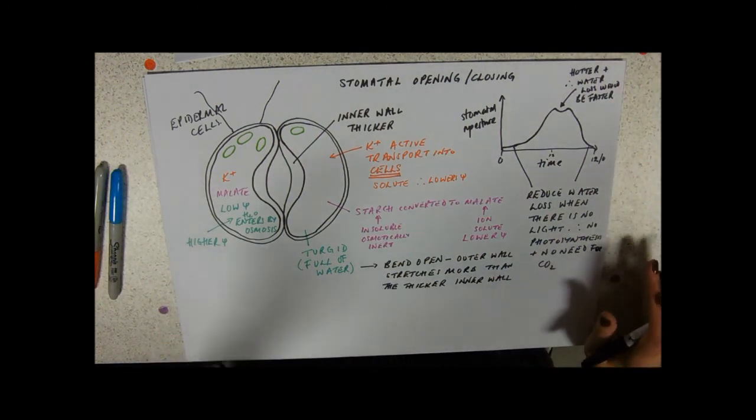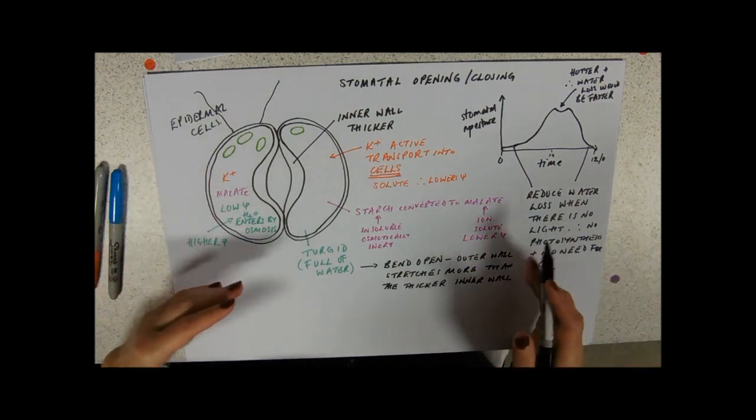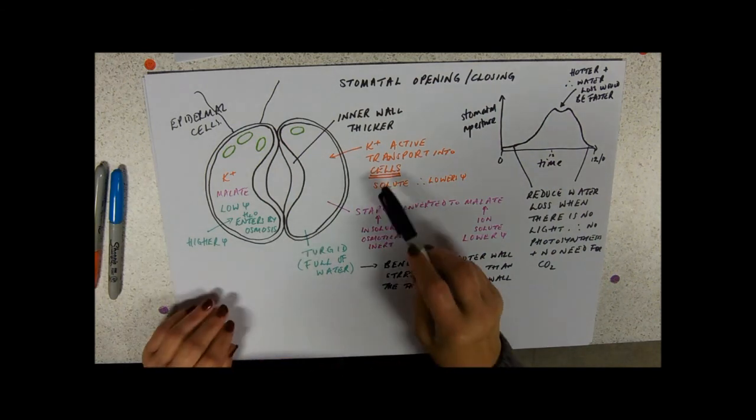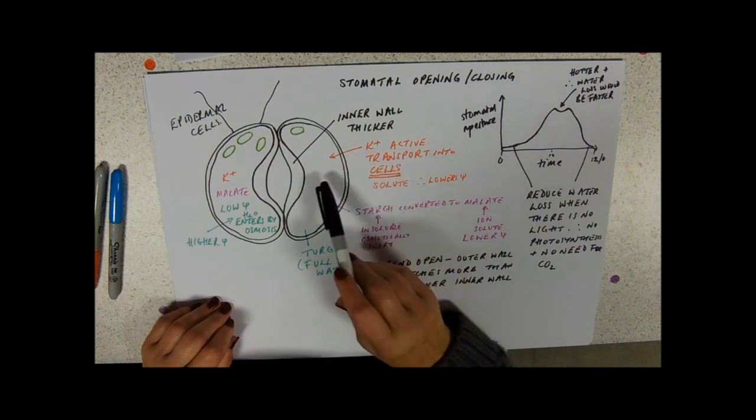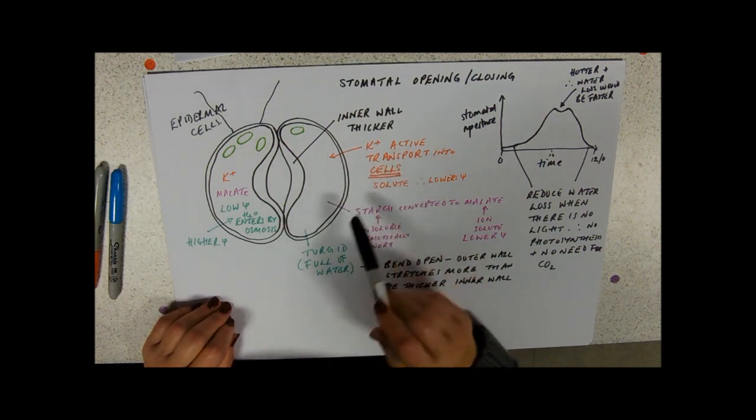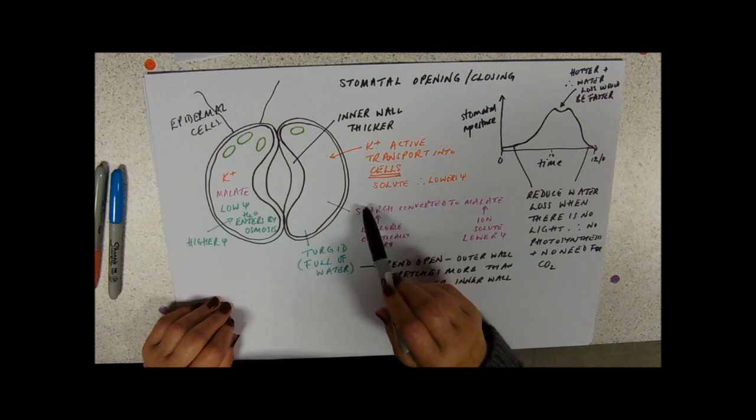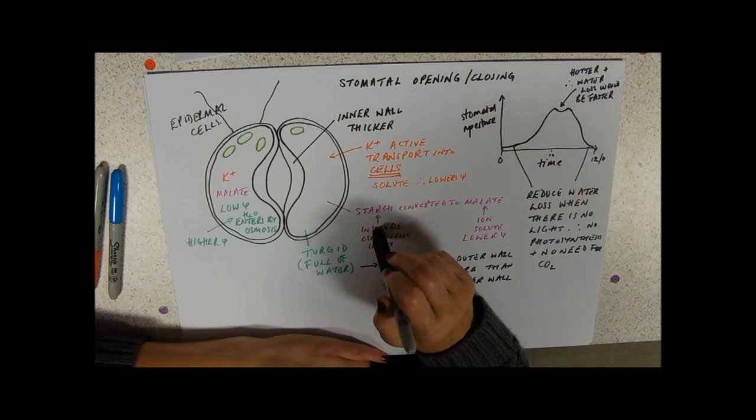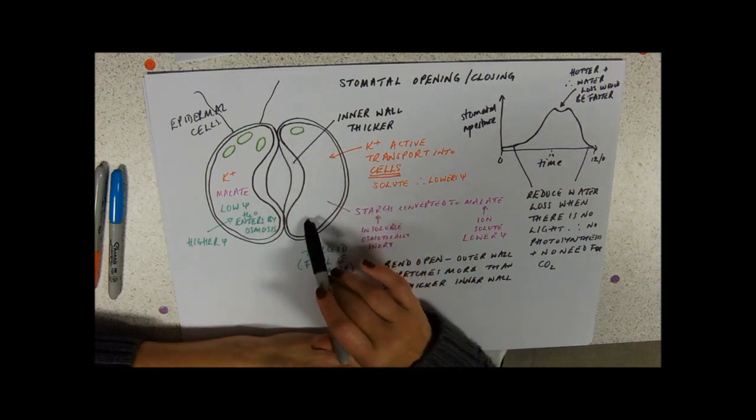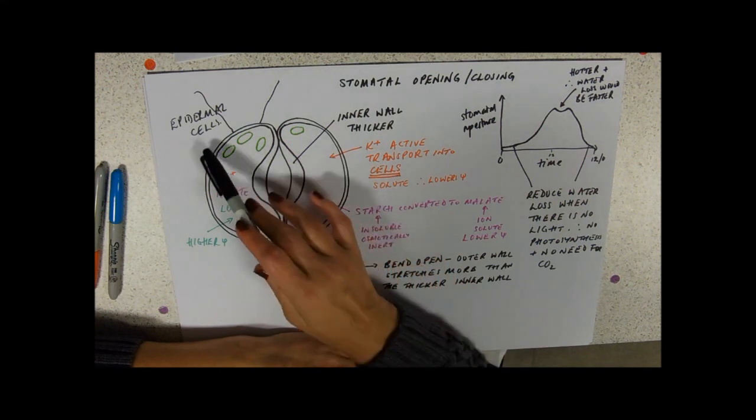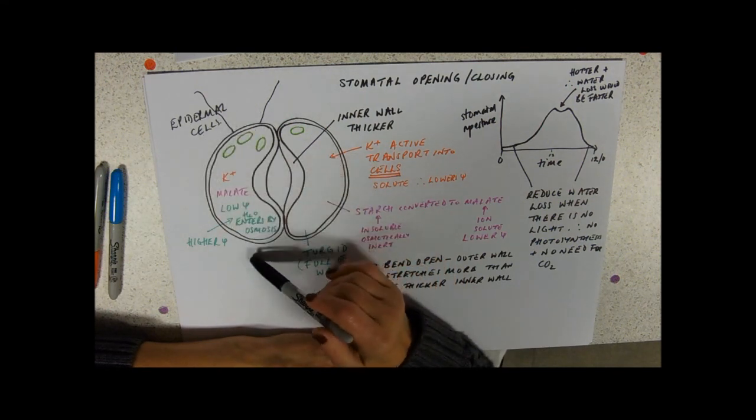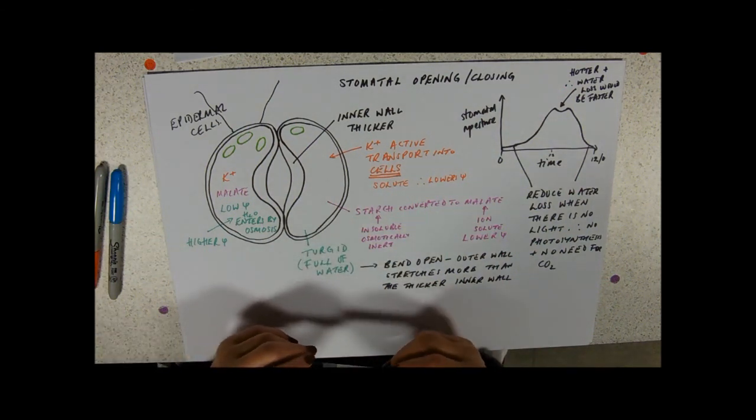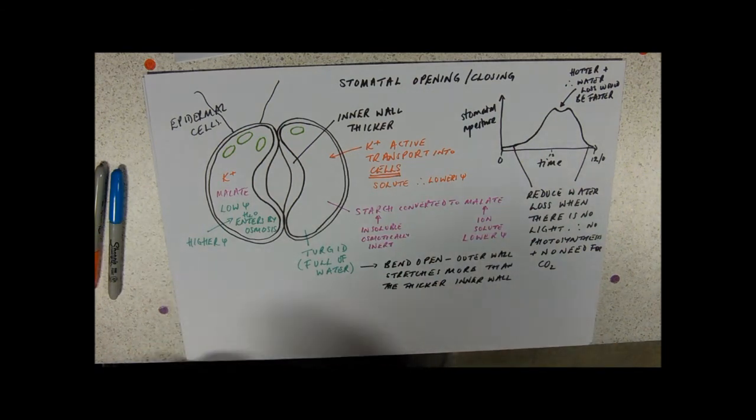So you also need the opposite story. So of course at night these are going to close. Remember that active transport we're doing low to high, so we're going to go high to low, so it'll be facilitated diffusion out. We're going to convert our malate back to starch from its osmotically active form to its osmotically inert form. The water potential of the cells will then rise, it'll go above that of the epidermal cells, water will leave by osmosis and these cells - the opposite of turgid is flaccid - and when they're flaccid they just kind of collapse together.